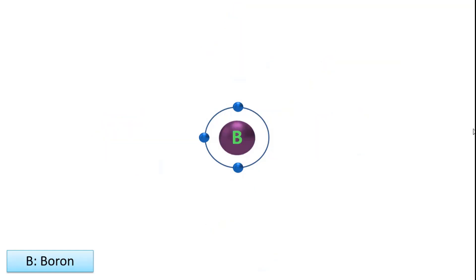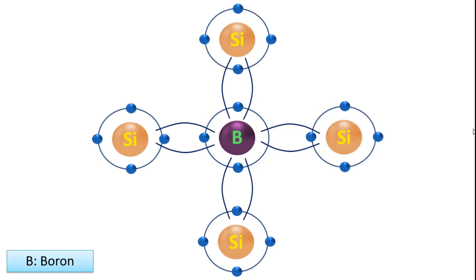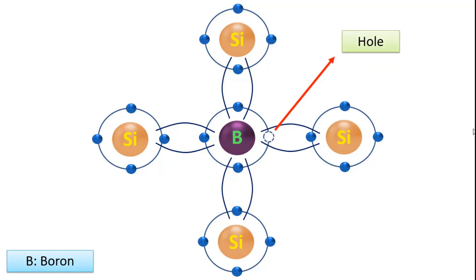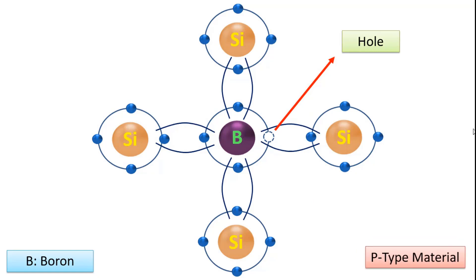Here is the boron element structure, indicated by the abbreviation B, which has 3 electrons in its last orbital. This is a conductor because it has 3 electrons in its last orbital. When we dope the boron atom with silicon, 3 electrons in the last orbital of boron bond with 3 silicon atoms. And ultimately, 1 silicon will remain idle to complete the bonds and a hole will form here. The new structure formed by the doping of boron and silicon is called p-type material. It doesn't matter whether it is silicon or germanium, since both have 4 electrons in their last orbital, they will be the same.